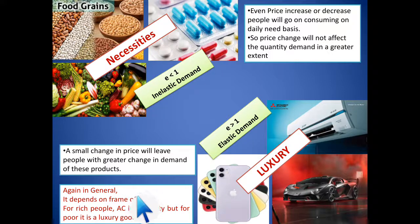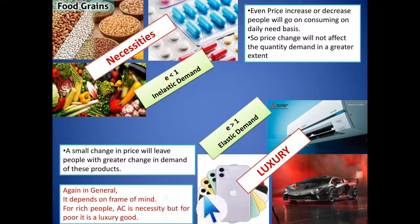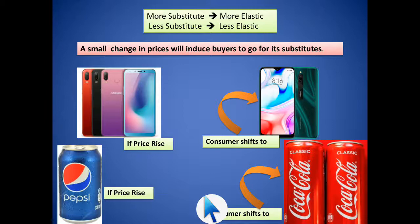In general, it depends on frame of mind. For rich people, an air conditioner is a necessity, but for poor people it is a luxury good. So we cannot classify goods strictly on this basis, because it varies from one person's frame of mind to another.